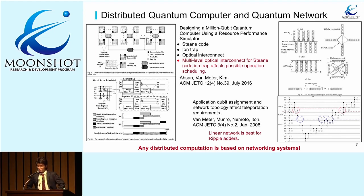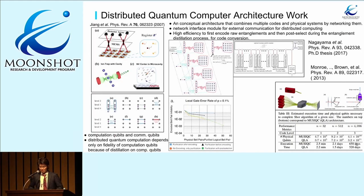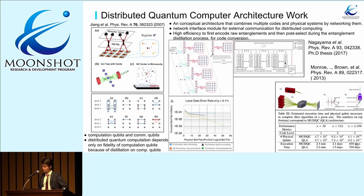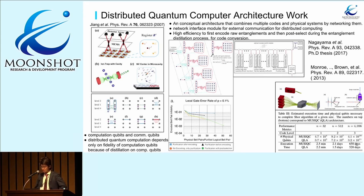Any distributed computation is based on a content and networking system, so we need a networking system. I would like to mention more work but don't have enough time — just a list, including my PhD thesis. Professor Ken Brown, who gave a great talk yesterday, also has a proposal about distributed quantum computing architecture with ion trap qubits.